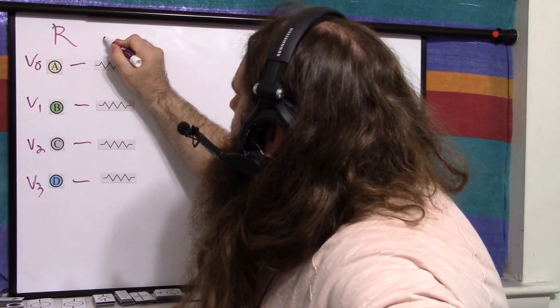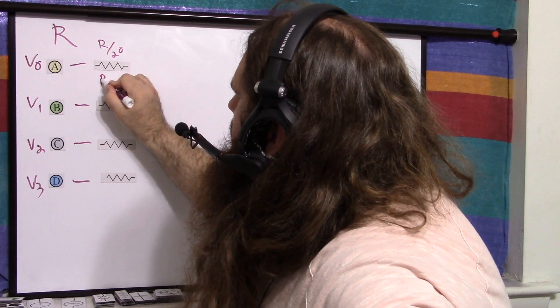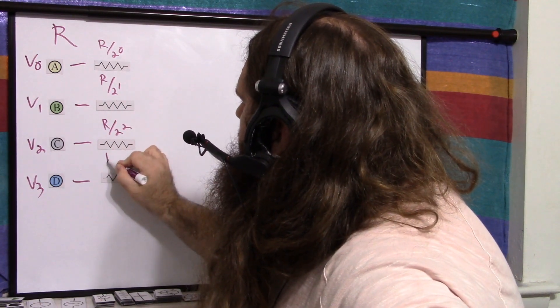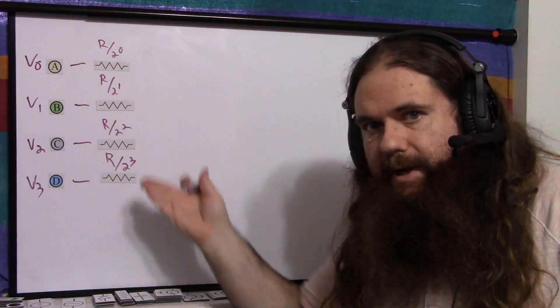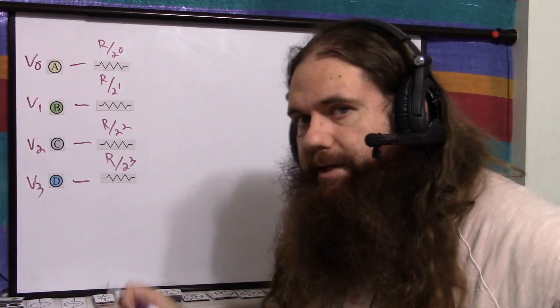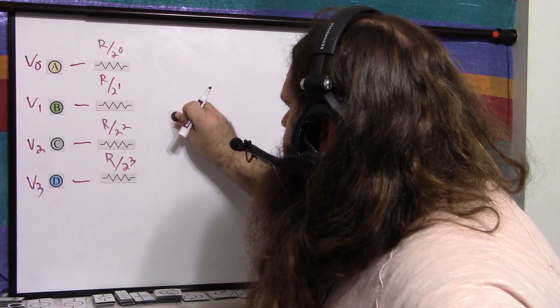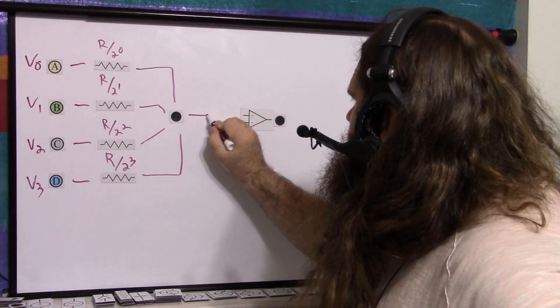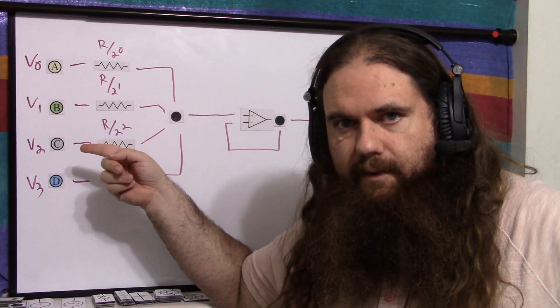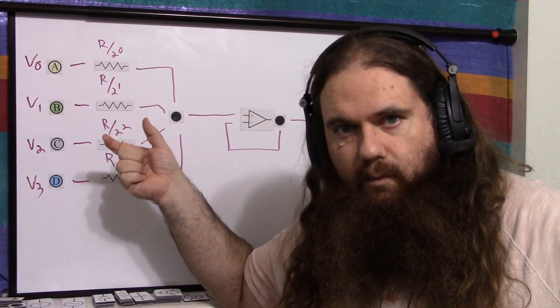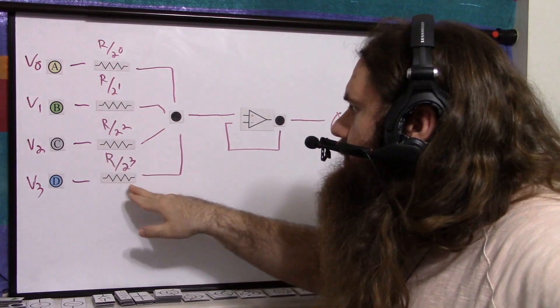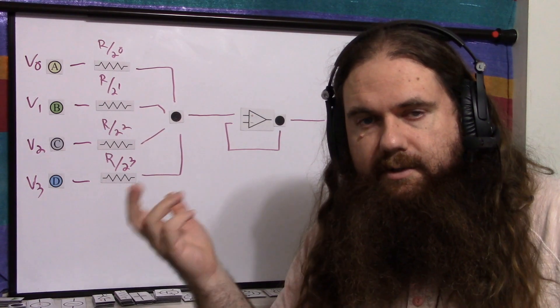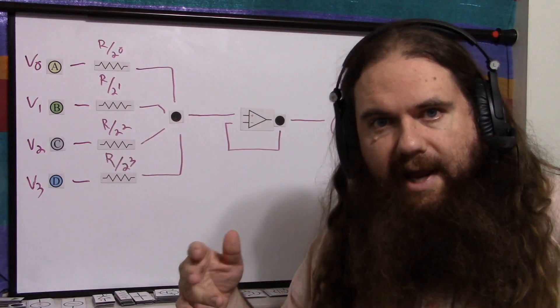Another way you could look at it is R divided by two to the zero, R divided by two to the one, R divided by two to the two, and R divided by two to the three. So there's the binary number directly incorporated into the resistors. So we connect all these together. Then we have a very simple, non-inverting summing amplifier. So each input voltage that is a one, a logic one, is going to be weighted based on its position in the number. So one of them will be worth a certain amount of weight and one of them will be worth an eighth of that weight.